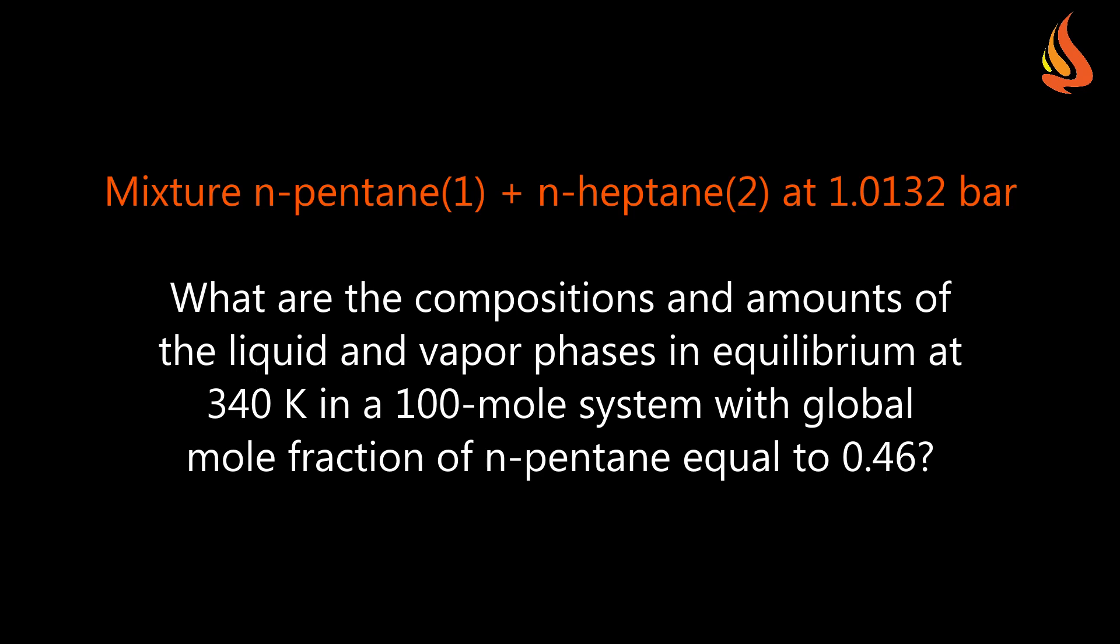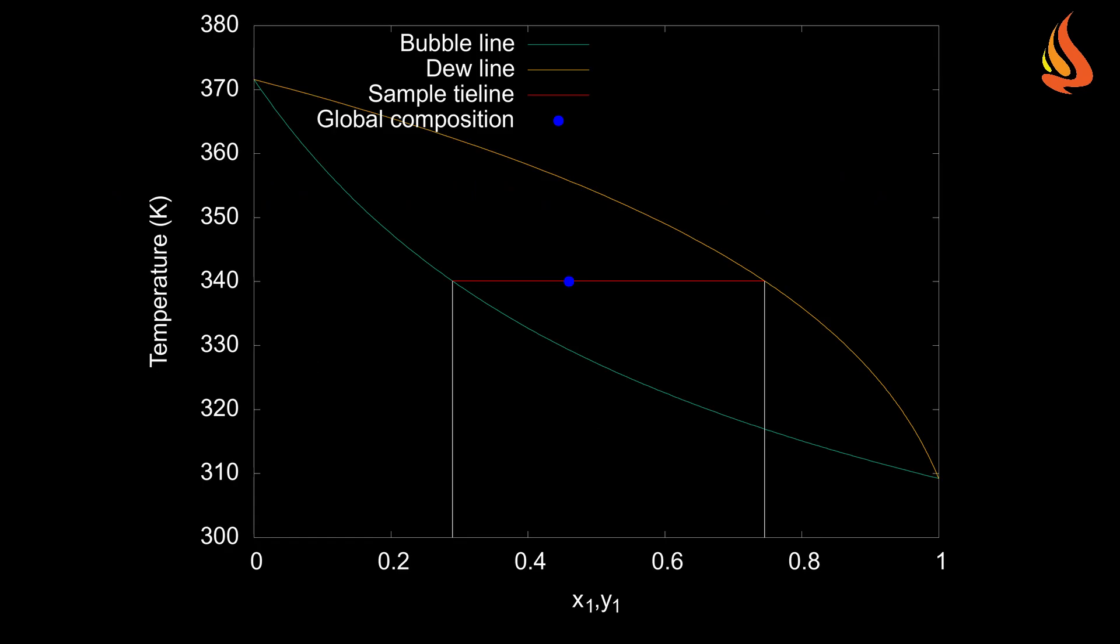Let's keep our focus on the same mixture at the same pressure at 340 Kelvin, but in a system whose global mole fraction of n-pentane is equal to 0.46. This plot is very similar to that of the previous problem. The only new element here is the blue dot, which represents the global composition of the system. The mixture splits into a liquid phase and a vapor phase whose compositions are found at the intercept of the tie line with the bubble and dew point lines. We find the same values as before, 0.29 and 0.75 for the mole fraction of component 1 in the liquid and vapor phase respectively.